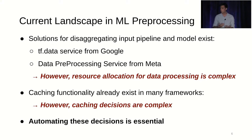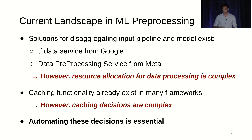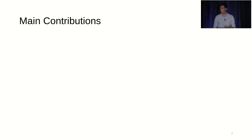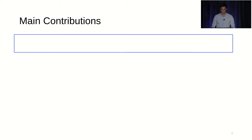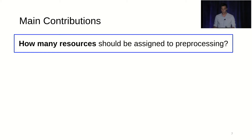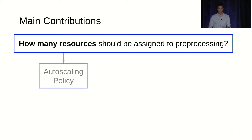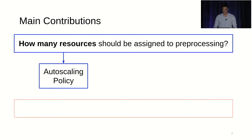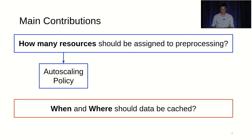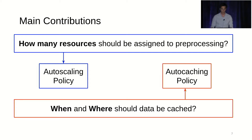If you want to improve ML workloads by optimizing preprocessing via these two methods, we definitely need to automate them — doing them manually is not practical. This is where our main contributions come in. We answer how many resources should be assigned to preprocessing via our auto-scaling policy, and when and where data should be cached via the auto-caching policy.